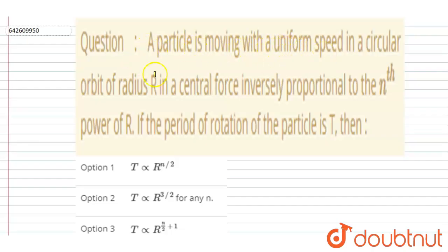Hello everyone, a particle is moving with a uniform speed in a circular orbit of radius capital R in a centripetal force inversely proportional to nth power of R.